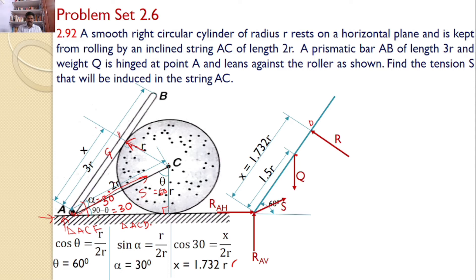I can take the moments from point A. RAH, RAV and S, all three forces are passing through the point A. Hence, no moments will be produced by all these three forces. Only two moments will develop. One is due to R in the counterclockwise direction, and Q in the clockwise direction.